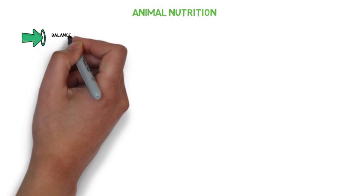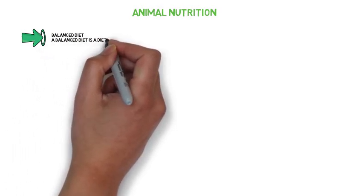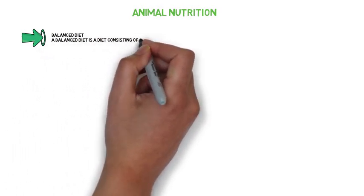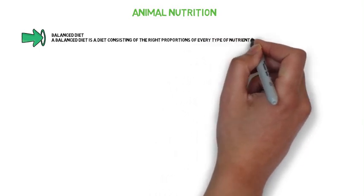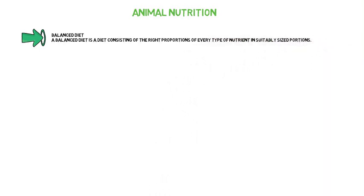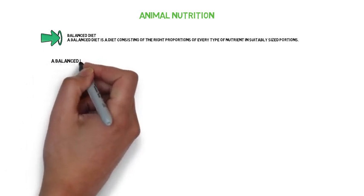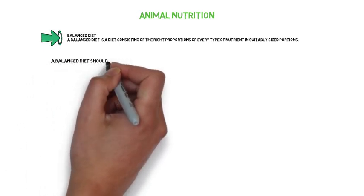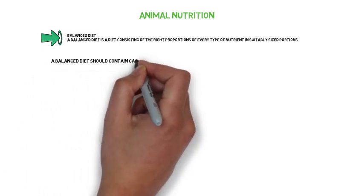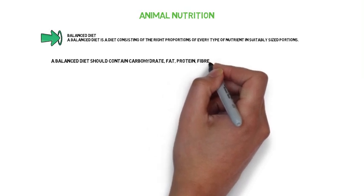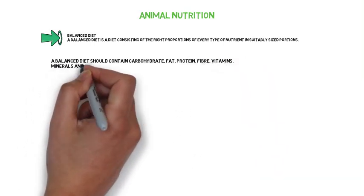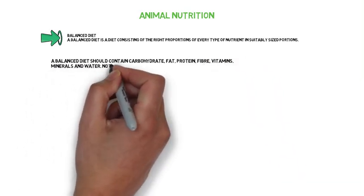Balanced diet. A balanced diet is a diet consisting of the right proportions of every type of nutrient in suitably sized proportions. A balanced diet should contain carbohydrates, fats, proteins, fibres, vitamins, minerals and water.